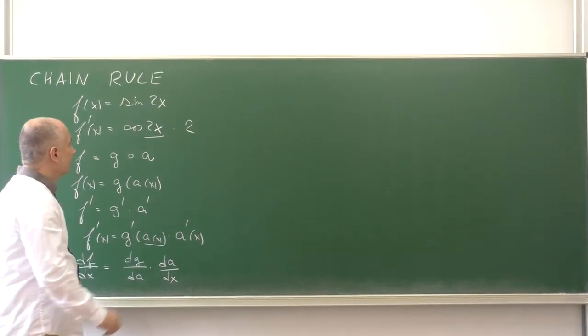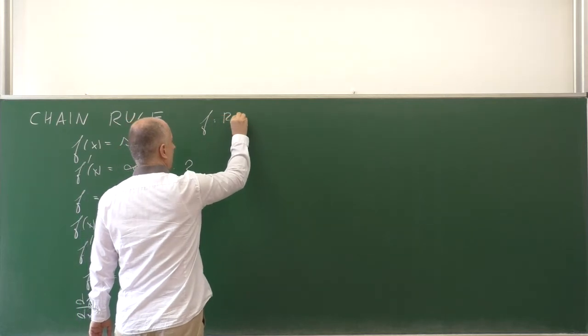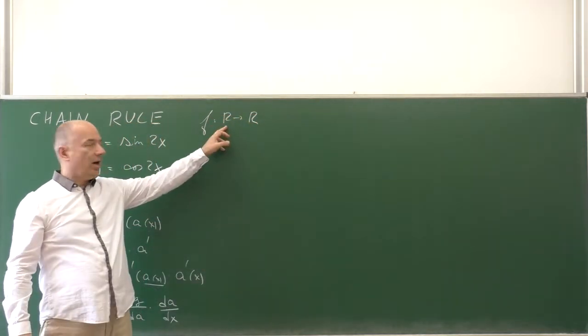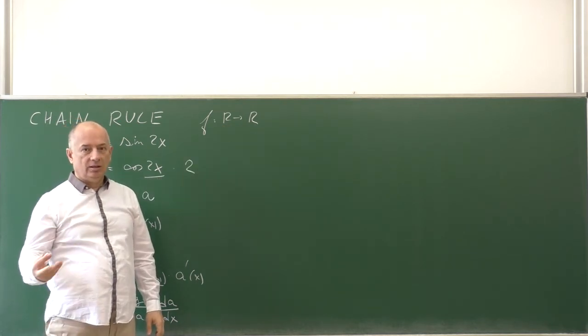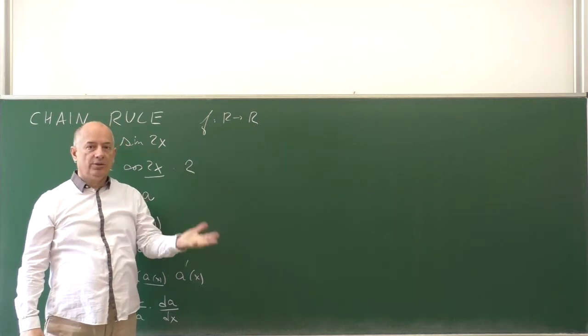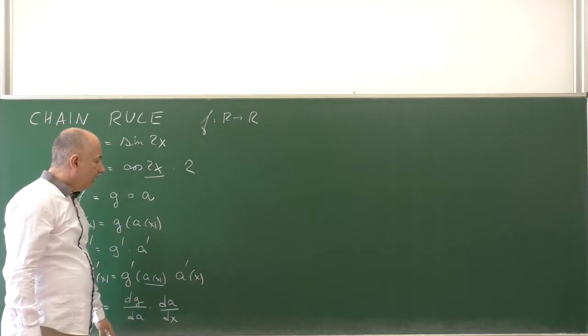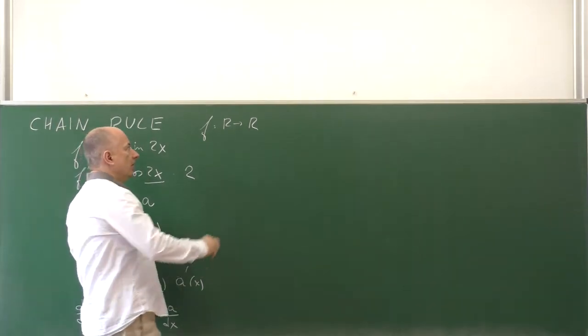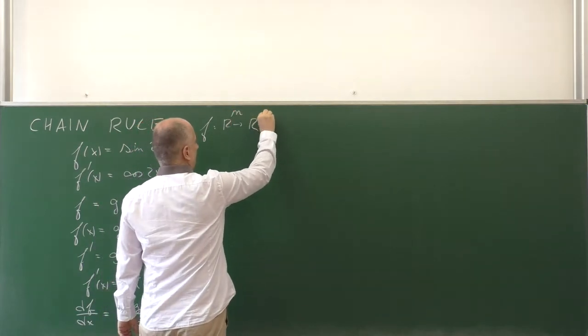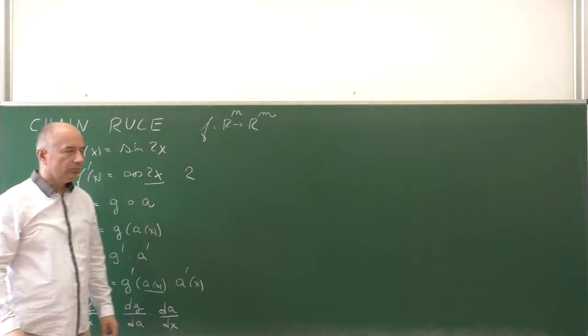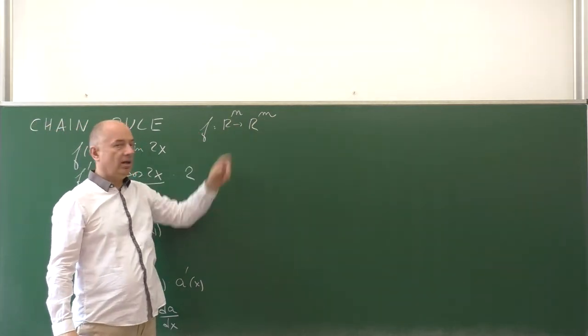So this was for function from R to R. That means one real argument, in other words a scalar argument, and one real result, in other words a scalar result. Now let us generalize this to a function from R^n to R^m. Then we could call it a vector function of a vector argument.